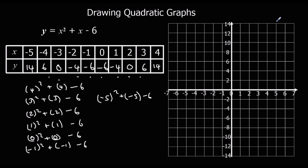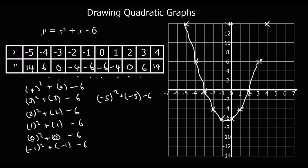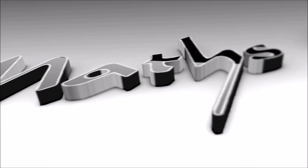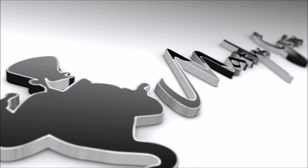So we've got the coordinates: (4, 14), (3, 6), (2, 0), (1, −4), (0, −6), (−1, −6), (−2, −4), (−3, 0), (−4, 6), (−5, 14). And again, we've got a nice U-shaped smiley face graph. We join through the points as accurately as possible to form the parabola.